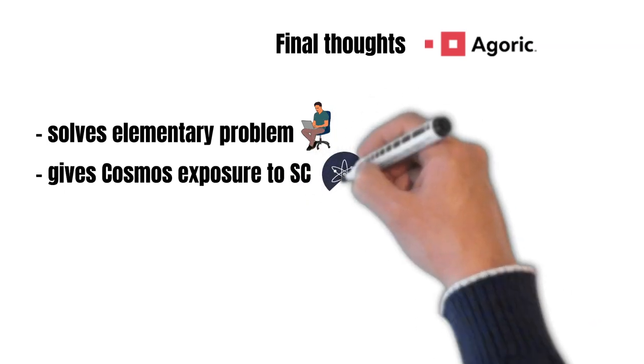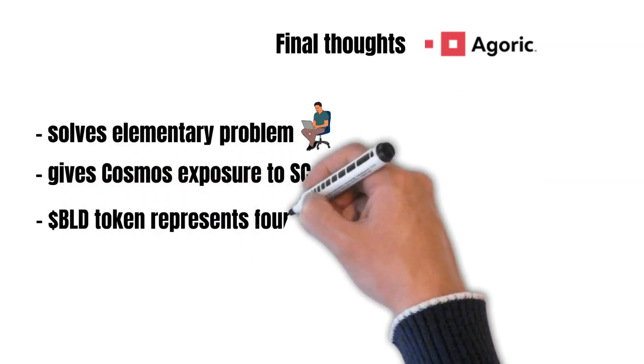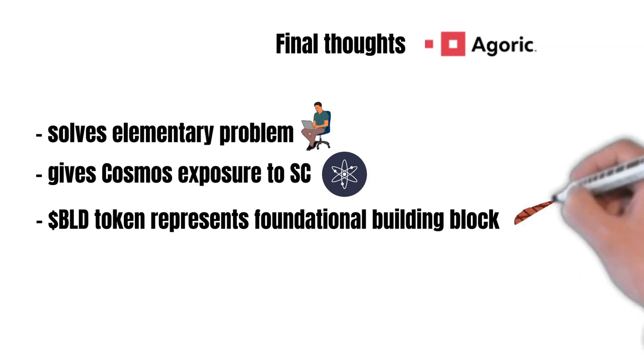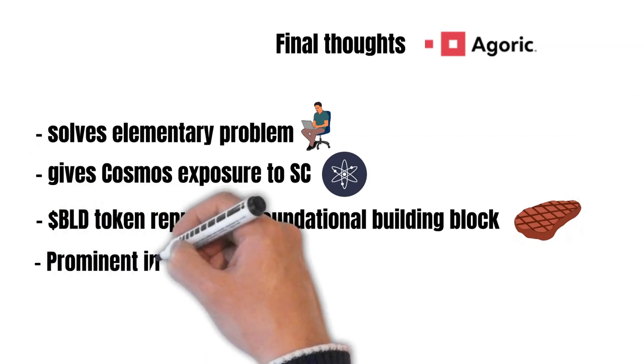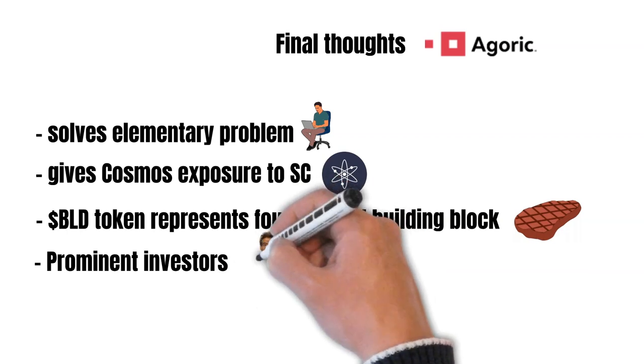And because of this, Agoric gives the Cosmos ecosystem exposure to smart contracts, which is a value driver for the whole Cosmos ecosystem and ATOM. The BLD token is also the fundamental building block to keep this ecosystem alive. And considering the growing staking economy and that you can stake BLD, this is another argument for investing in BLD.